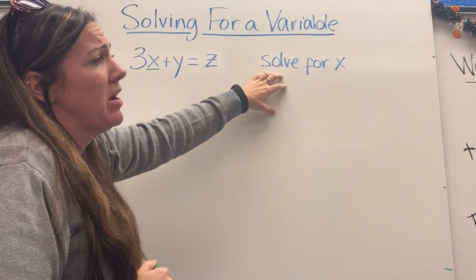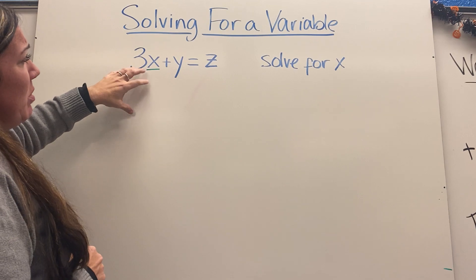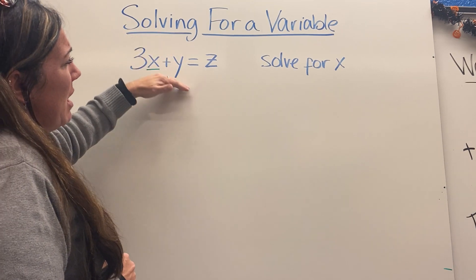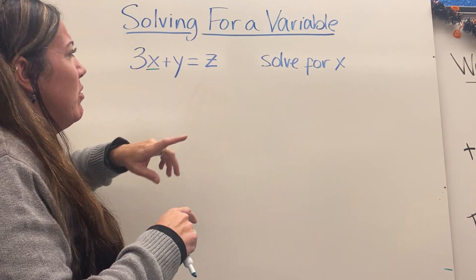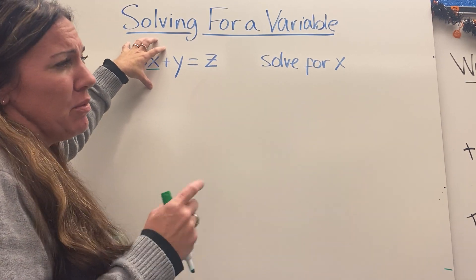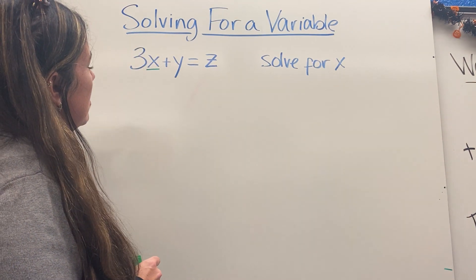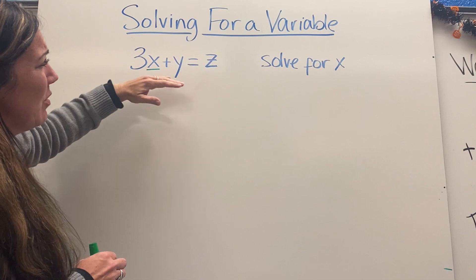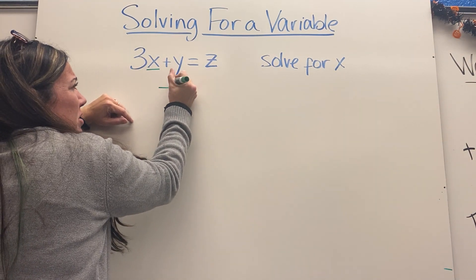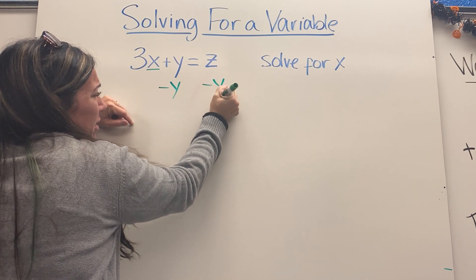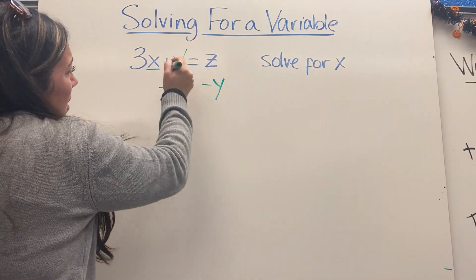One thing that's really good is for you to start to look at and say what's going on with this specific variable. So x is being multiplied by 3, then I'm adding y to it. If I unravel it and work backwards, the first thing I do is get that variable term by itself first, so I subtract y from both sides.